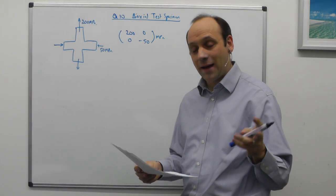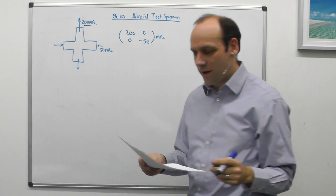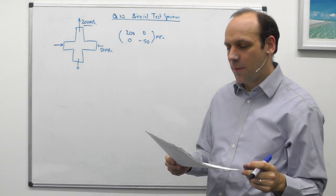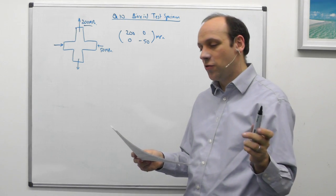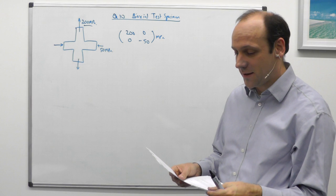And find what the angle is between the longitudinal stress axis, so this one, and the plane of maximum shear. Finally, it asks us to find the normal stress at an angle of 30 degrees clockwise from the longitudinal stress axis.